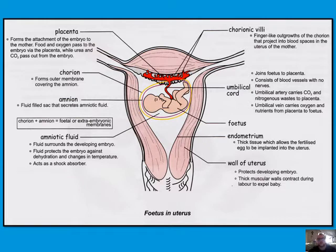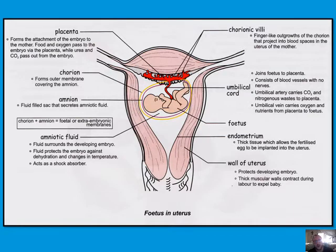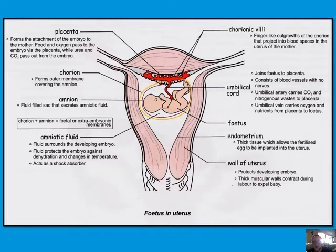The placenta forms the attachment of the embryo to the mother — food and oxygen pass to the embryo via the placenta, while urea and CO2 pass out from the embryo. The chorion forms the outer membrane covering the amnion. The amnion is a fluid-filled sac that secretes amniotic fluid — those cells actually secrete amniotic fluid. The chorion plus amnion gives you the fetal extra-embryonic membrane. The amniotic fluid surrounds the developing embryo, protecting it against dehydration, temperature change, and acting as a shock absorber.